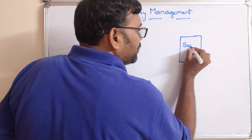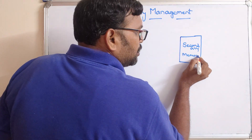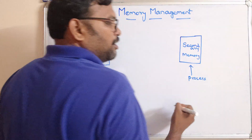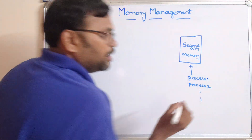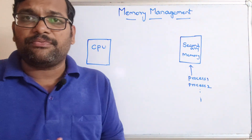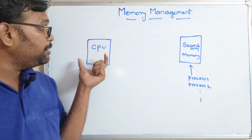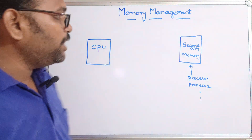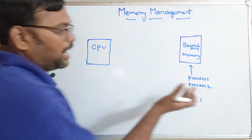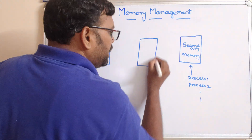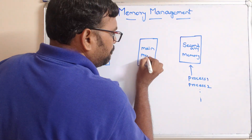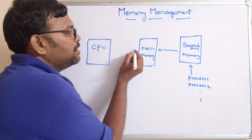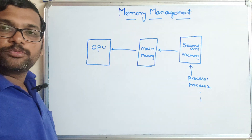From the secondary memory, the processes — process 1, process 2, etc. — will be stored there. Simply we can say the files will be stored in the secondary memory. The CPU gets the files from the main memory, meaning the CPU can execute instructions only from the main memory. So whenever a process wants to be executed, that process will be retrieved to the main memory and executed.